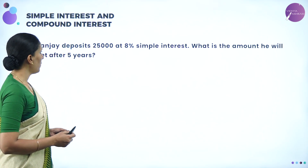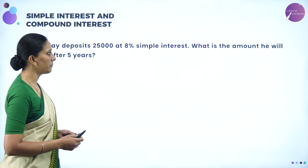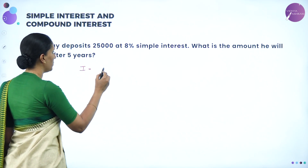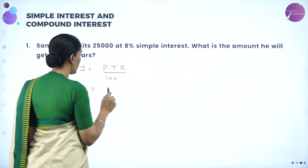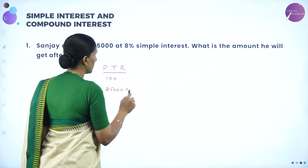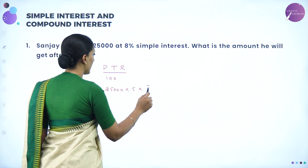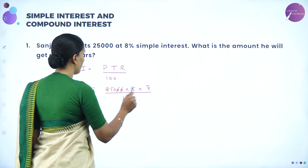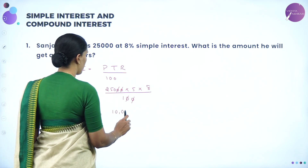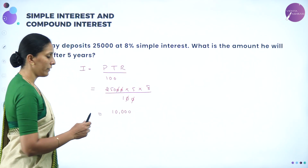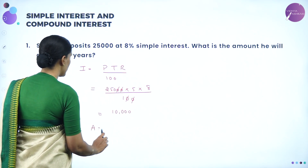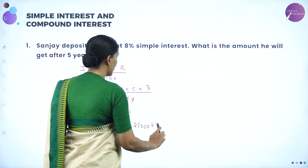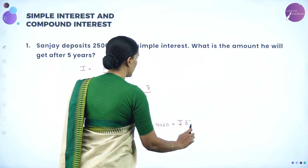The first question: Sanchai deposits 25,000 at 8% simple interest. What is the amount he will get after five years? Using the formula I = PTR/100, we get 25,000 into 5 into 8 divided by 100, which gives interest of 10,000. The amount is principle plus interest, so 25,000 plus 10,000 equals Rs 35,000.